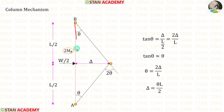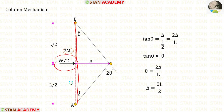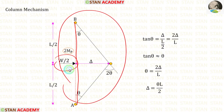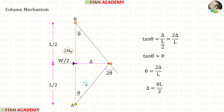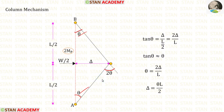In this column the point load acts in the center, so we will have a symmetrical triangle. Since this triangle is symmetrical, the angles at points A and B will be the same. Let us keep the angles as θ. So this angle should be θ + θ, giving us 2θ.